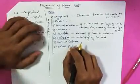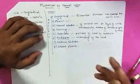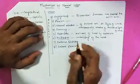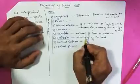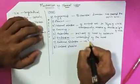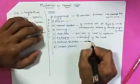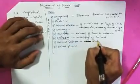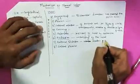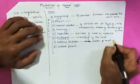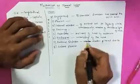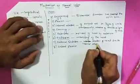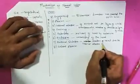And then is external rotation. In external rotation, what happens? There is rotation of the head externally due to internal rotation of the shoulder. So in external rotation, there is rotation of the head due to internal rotation of the shoulder.